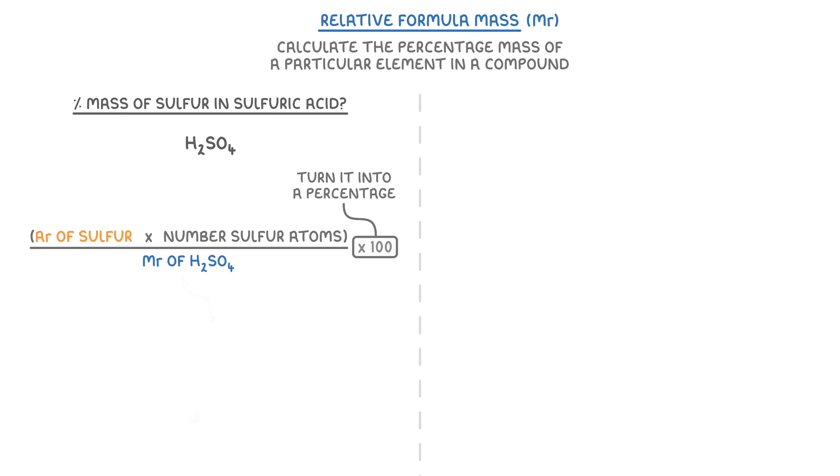So here, we would do 32, which is the Ar of sulfur, times 1, because there's only 1 atom of sulfur in sulfuric acid, divided by 98, as that was the compound's relative formula mass that we found a minute ago. This gives us 0.327, which we then times by 100, giving us our answer of 32.7%.